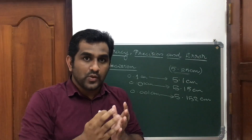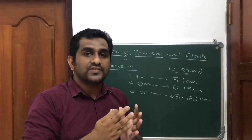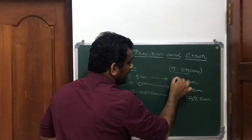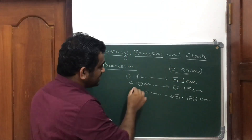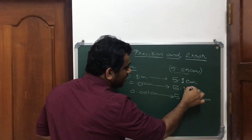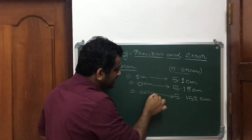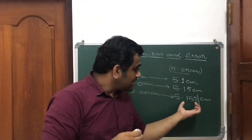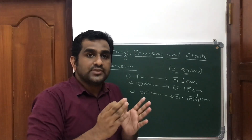What is precision? Precision tells us the maximum limit up to which a measurement can be taken. If you have an instrument with a least count of 0.1 cm, the measurement is in one decimal place. If the least count is 0.01 cm, the measured value is in two decimal places. If the least count is 0.001 cm, the measurement is in three decimal places.